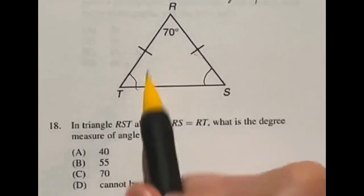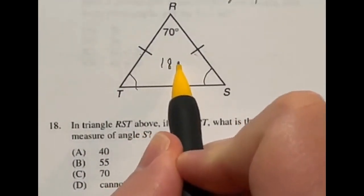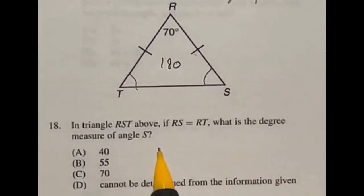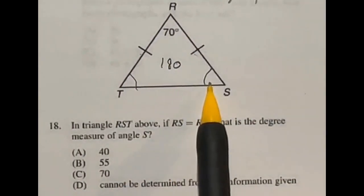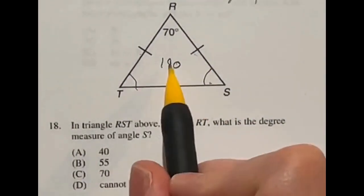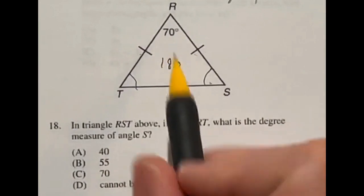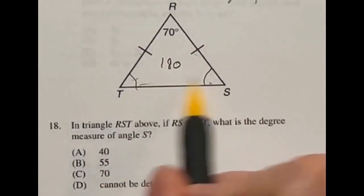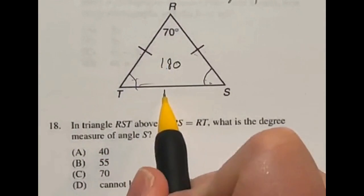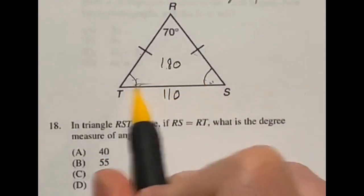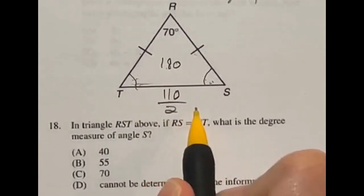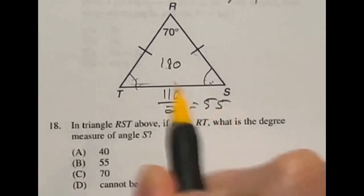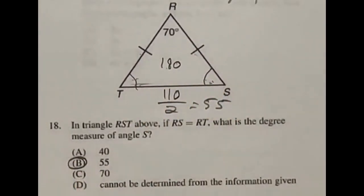We know that all the angles inside of a triangle add up to 180 degrees always. So in that case, when we're trying to find out what S is, I'm going to find out what's left over after taking this one away and then divide it in 2 since these two have to be equal. So 180 minus 70 is going to give me 110 for both of these together. Divide that by 2 and it gives me 55 for each one. That means our answer here is B.